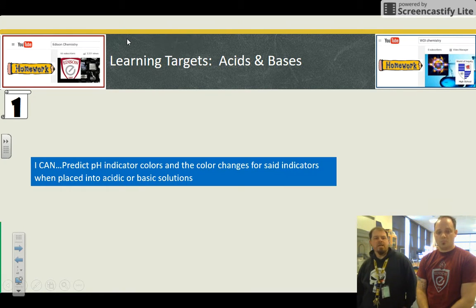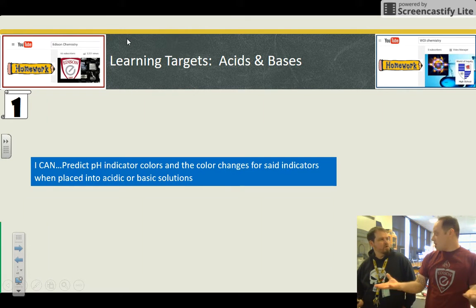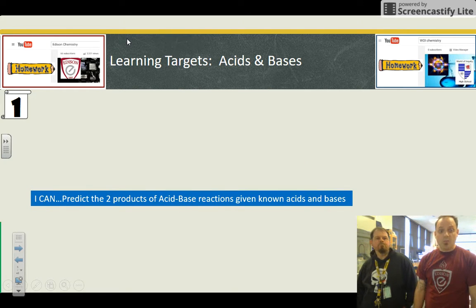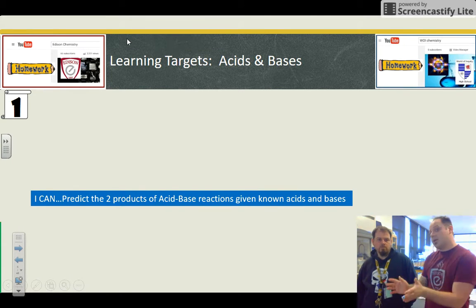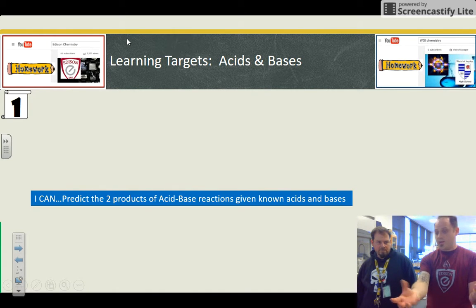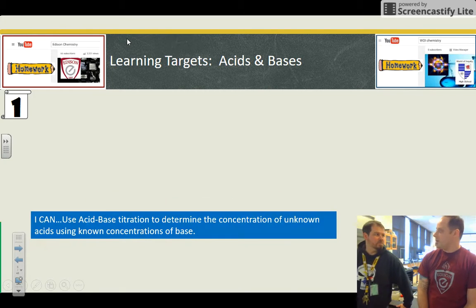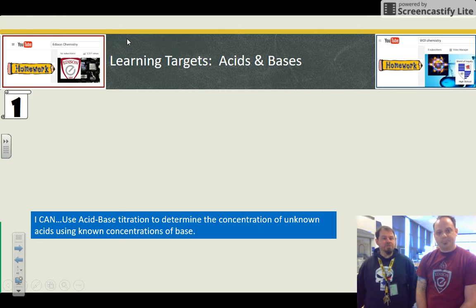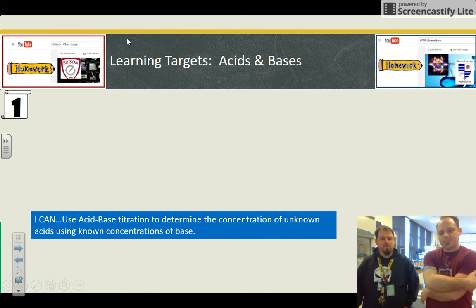Predict pH indicator colors. So basically, I got a solution at a pH, what is the indicator going to color? Using a chart, of course. I can predict the products of acid-base reactions given known acids and bases. Just like a double replacement, we're going to show you how to predict what two things come out of this acid plus that base. There's two generic things all the time, which is nice, so you can memorize that, and then it's just a double replacement. Use acid-base titration to determine the concentration of an unknown. This is the lab, that's my favorite. This is the algebra piece that's in the reference tables also. Very useful technique in life.